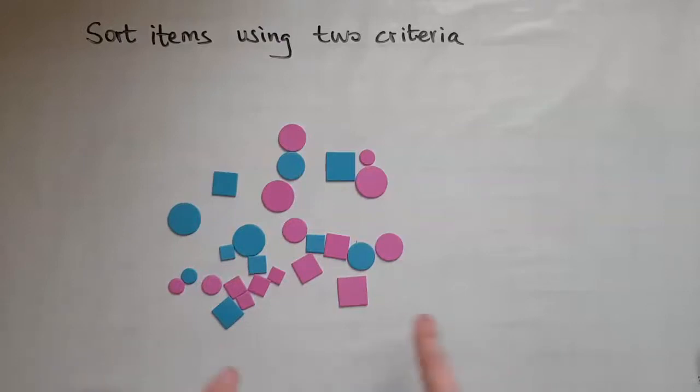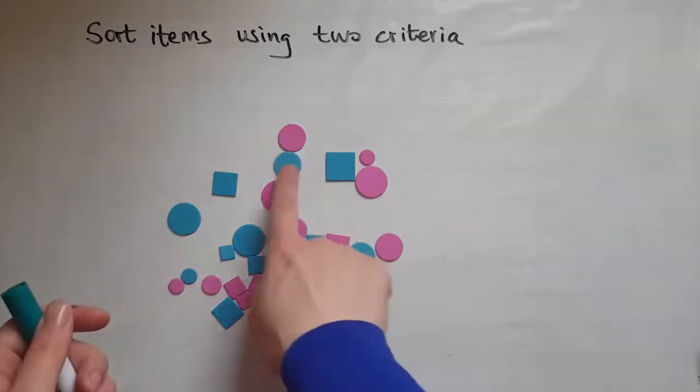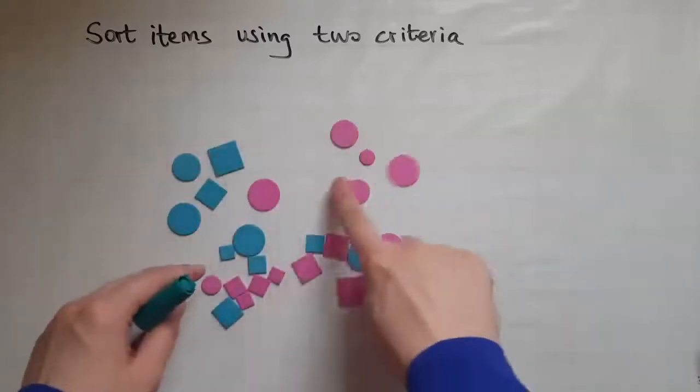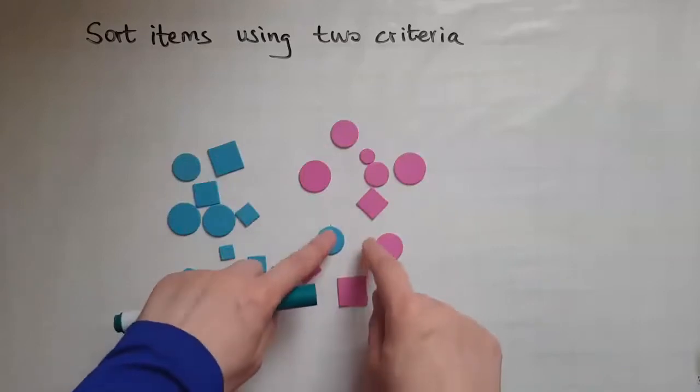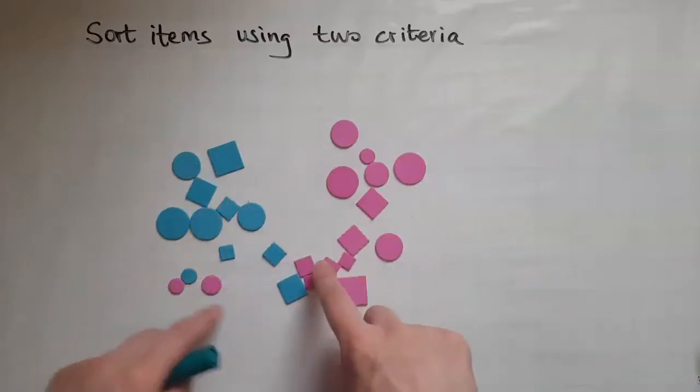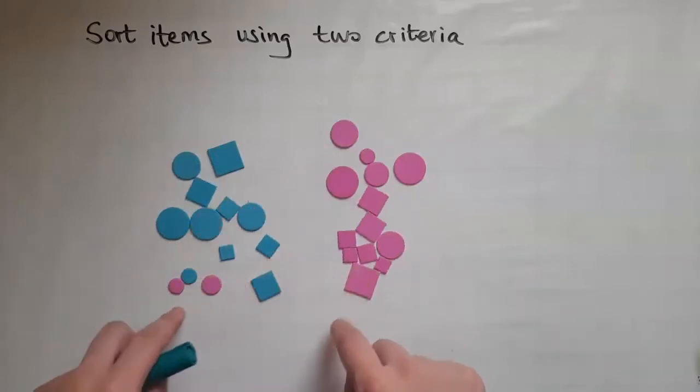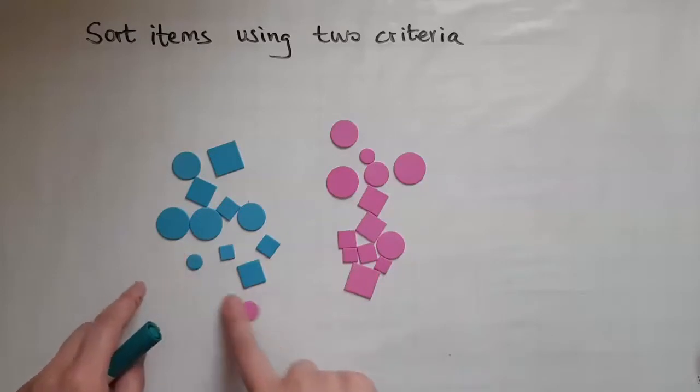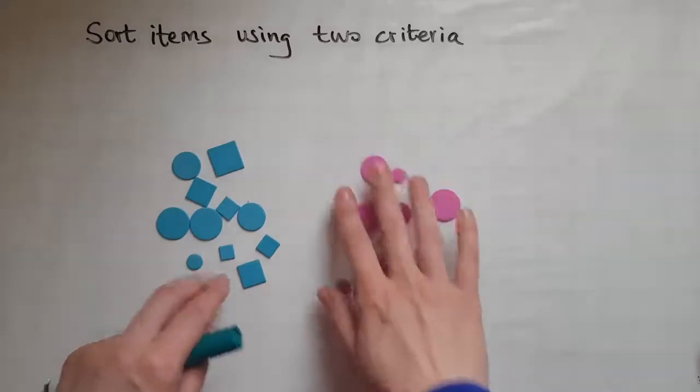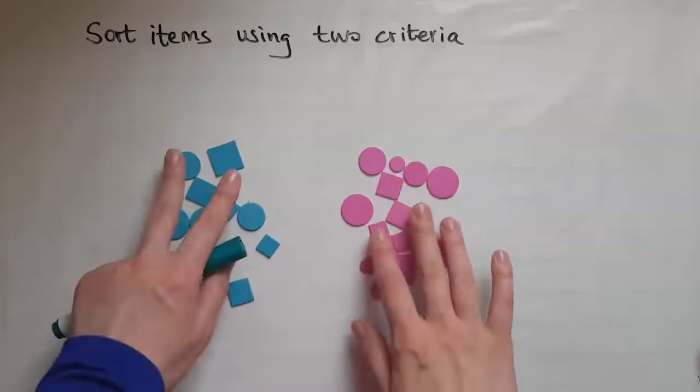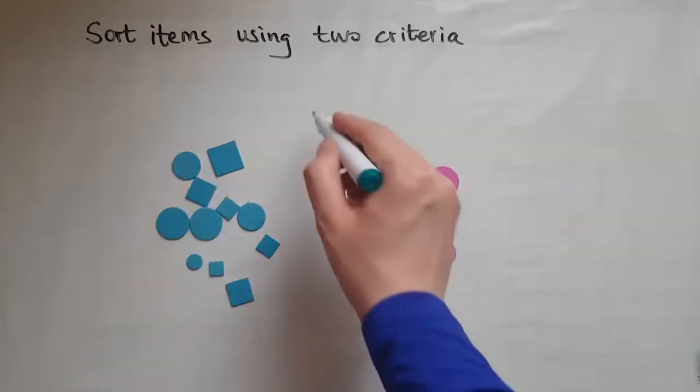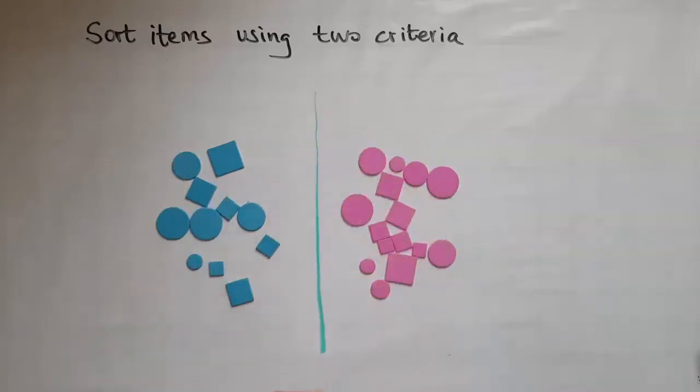I can immediately spot that there are two colors, so that's one way to sort them. So I'll sort them into blue and pink. Right? So I've got blue and pink.